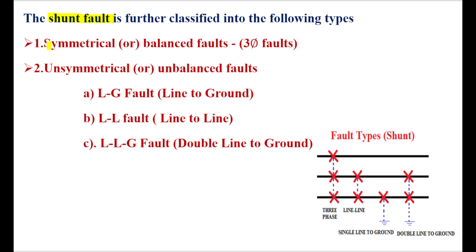Shunt faults are classified into two major types. One is symmetrical or balanced fault, that is a three-phase fault, where all the phases are short circuited. The other is unsymmetrical or unbalanced fault, which includes LG fault (line to ground), LL fault (line to line), and double line to ground fault.